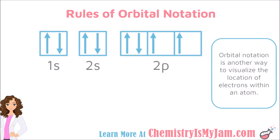This is Rebecca from ChemistryIsMyJam.com. In this video, we're going to be looking at orbital notation. Orbital notation is another way to visualize the location of electrons within an atom. On the screen, you have the orbital notation for oxygen in its ground state. We're going to take a look at what information we can get from this, and then we'll look at how you can write the orbital notation for any element.